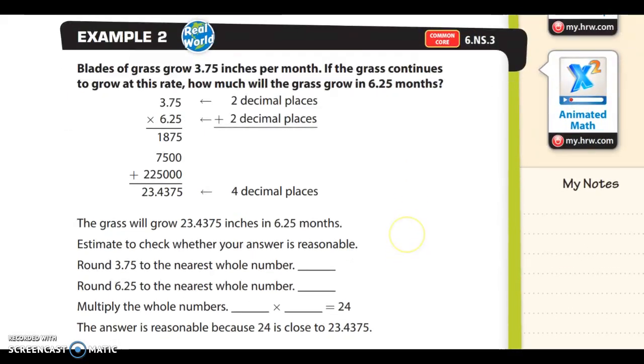Example 2: blades of grass grow 3.75 inches per month. If the grass continues to grow at this rate, how much will the grass grow in 6.25 months? They do all the math for you and you get an answer here of 23.4375. This is asking us to estimate by rounding, so skip down to here.